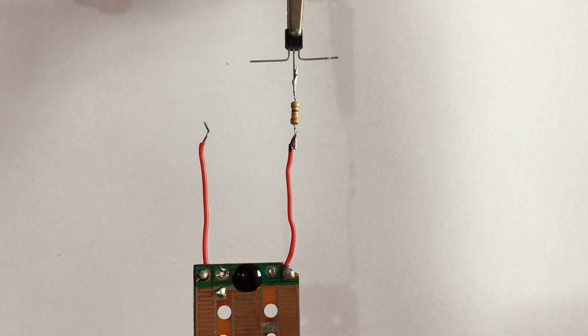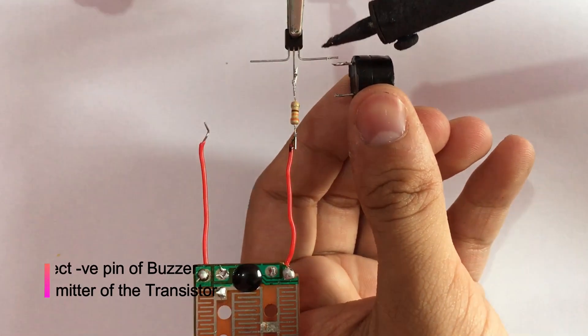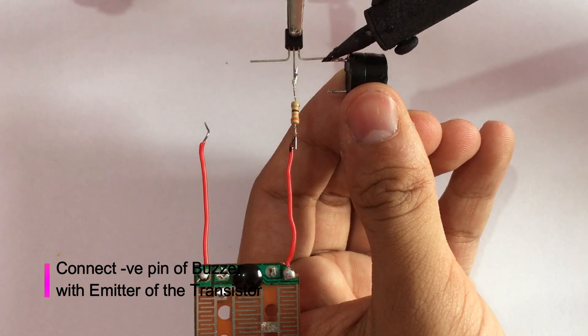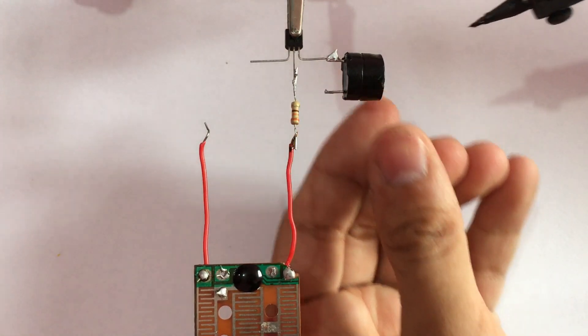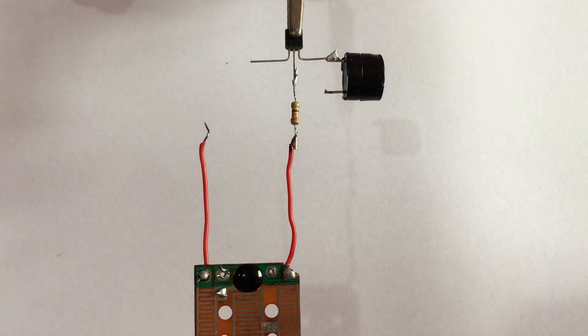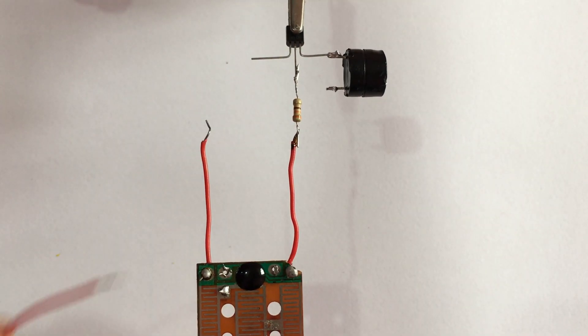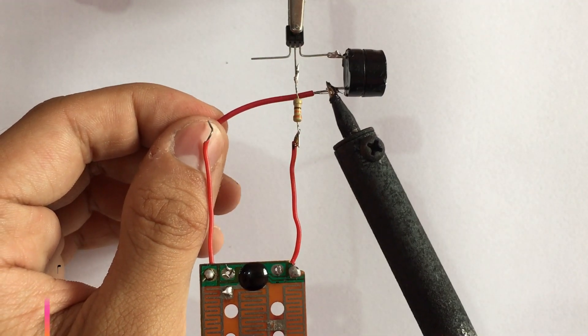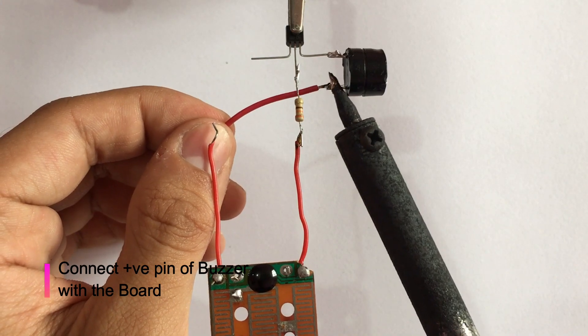Now connect the negative side of the buzzer to the emitter of the transistor. Connect the positive side of the buzzer to another side of the board.